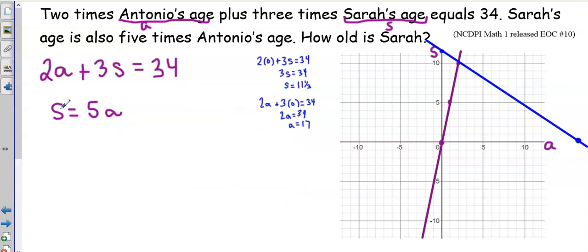For substitution, all I need to do is since S equals 5A, I'm going to substitute it in for S. So I'm going to take S out and substitute in 5A. I'll copy down this 2A plus 3, then I'll use parentheses to show that 5A is going to go in the place of S.